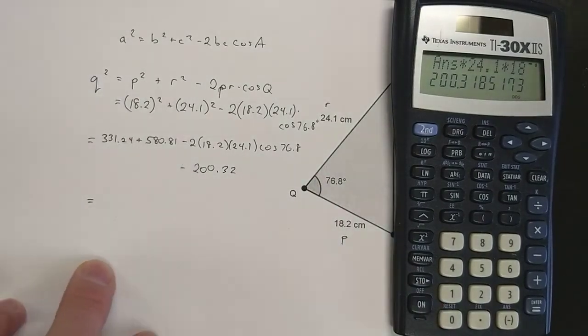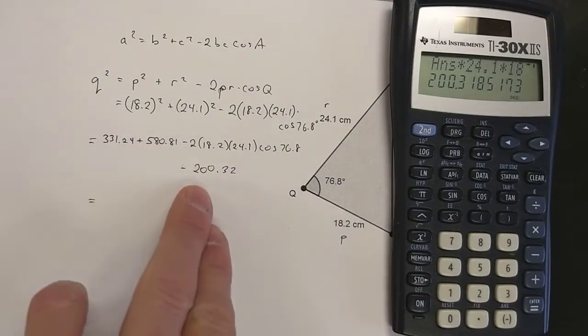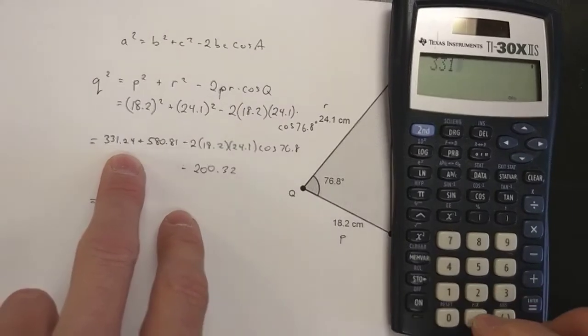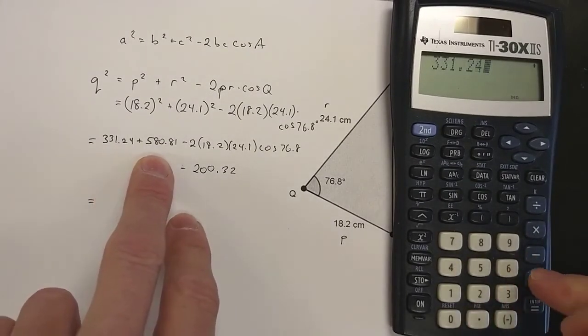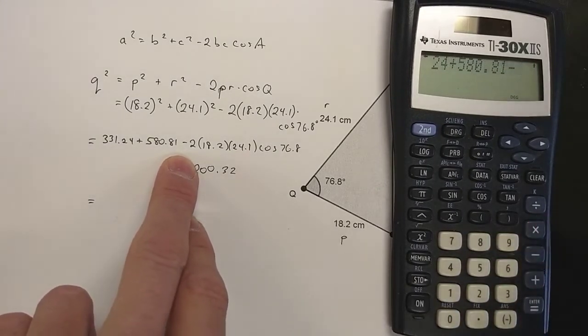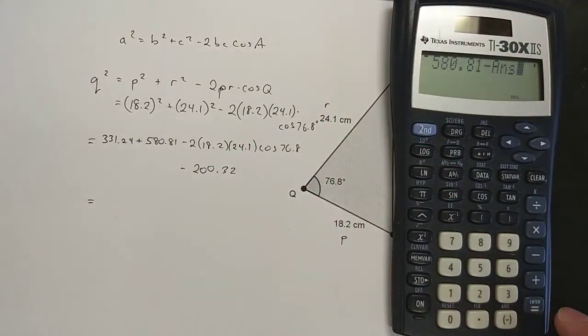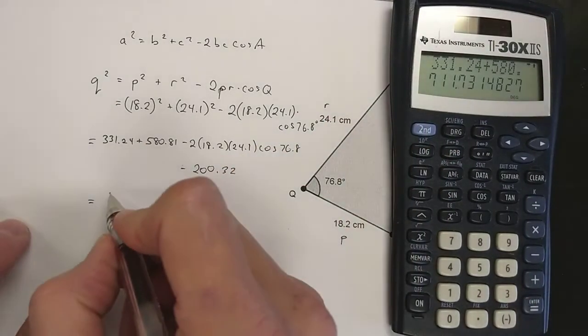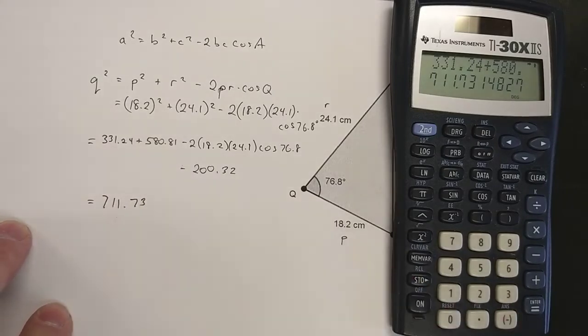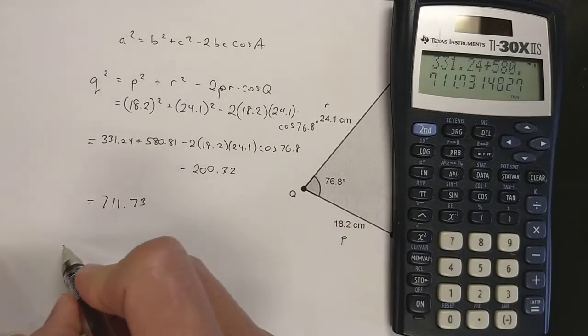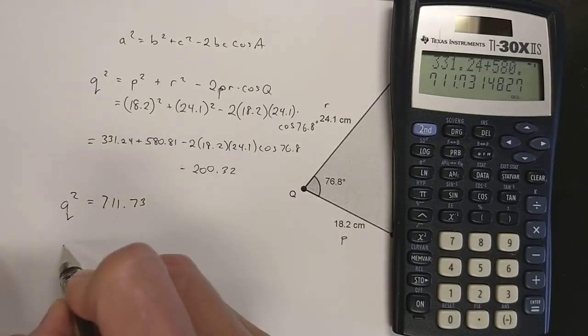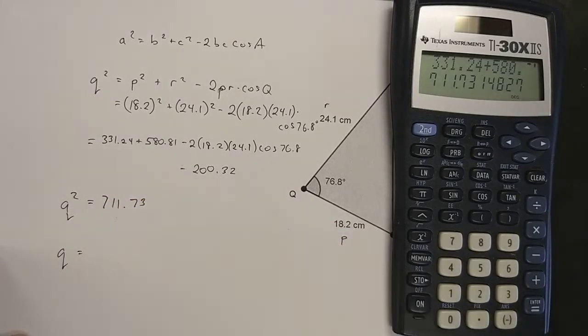When I add these three, or this plus this minus that, that's 331.24 plus 580.81 minus that answer that I had. I have an answer button, so I'm just going to use that. That works out to 711.73. I can't forget that this is what q squared equals, so I'm going to have to square root both sides.